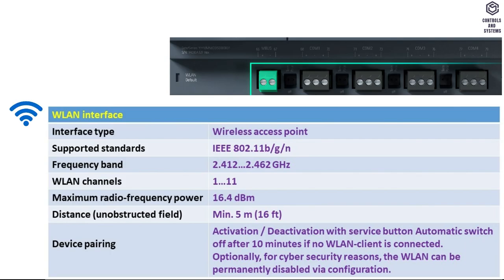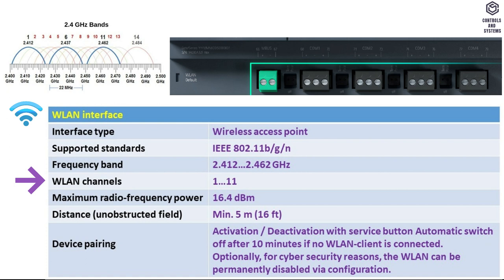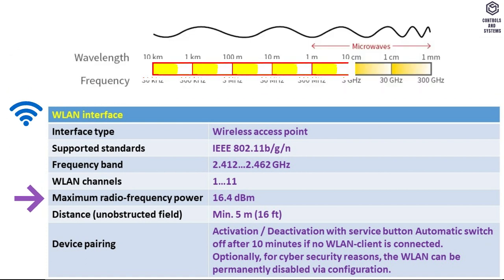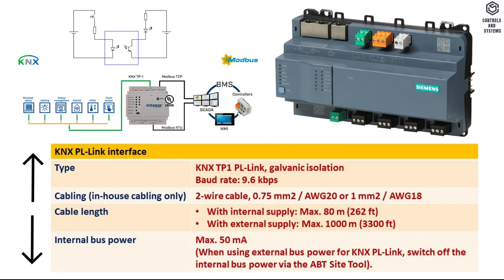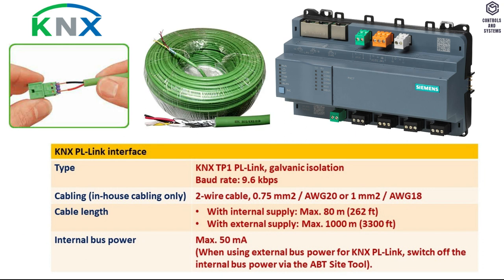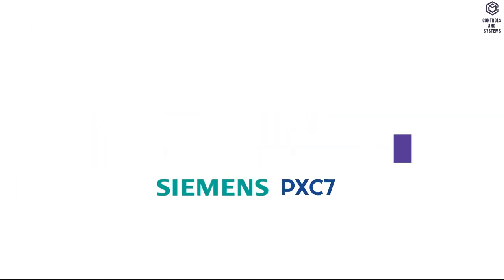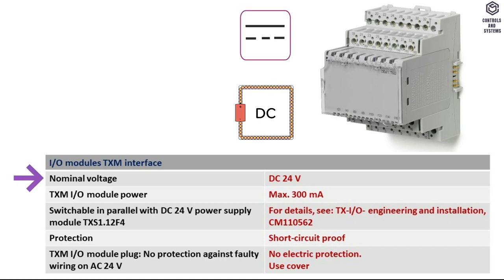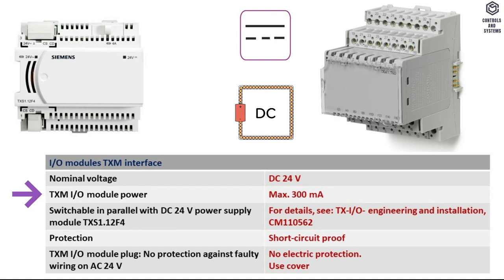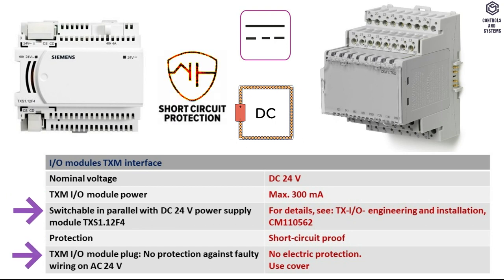LAN (WLAN) Interface table indicates specifications and ranges of Interface Type, Supported Standards, Frequency Band, WLAN Channels, Maximum Radio Frequency Power, Distance, and Device Pairing. KNX BL Link Interface table indicates Type, Cable Length, and Internal Bus Power. TXM IO Modules Interface table indicates Nominal Voltage, TXM IO Module Power, Protection, and TXM IO Module Plug.